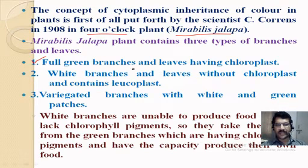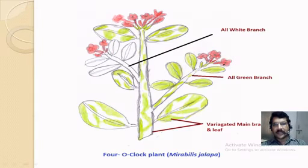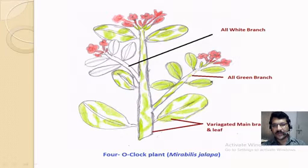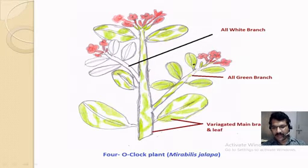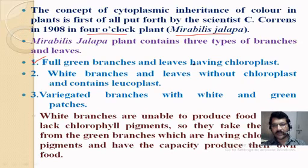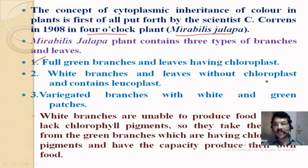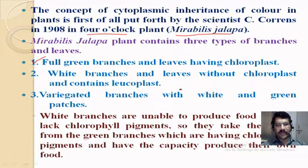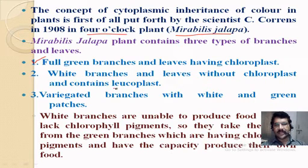The first type of branch is fully green branches and leaves having chloroplasts — totally green in color, as you can see here with all leaves fully green. The second type is white branches and leaves without chloroplast; instead they contain leukoplasts, which are white pigments.